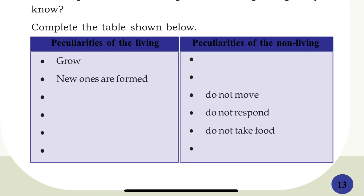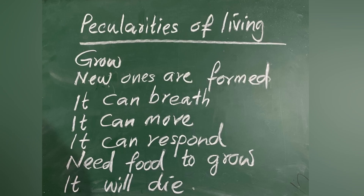What is the meaning of peculiarities? Peculiarities means the special characteristics of living things. Living things can breathe. Living things can move. Living things can respond. Living things need food to grow. Living things will die.